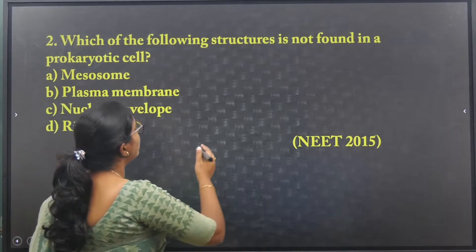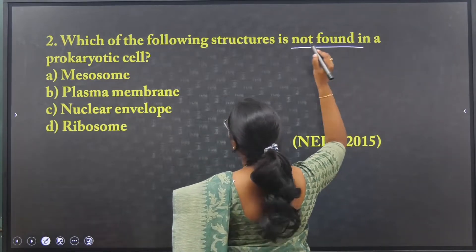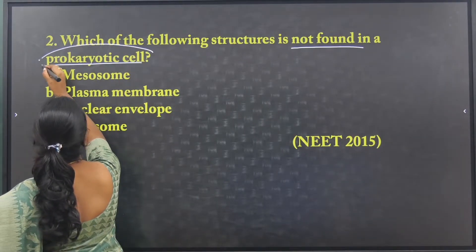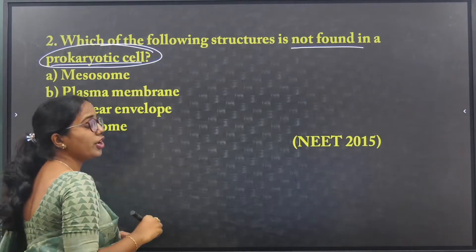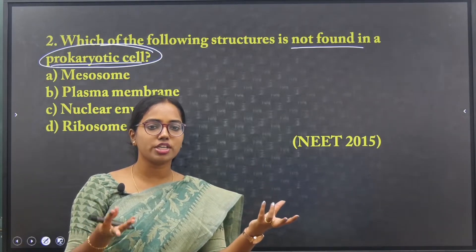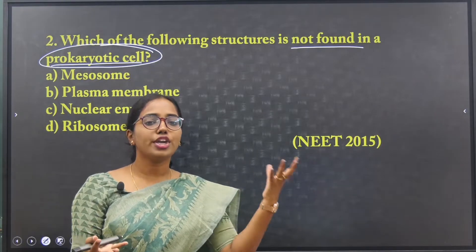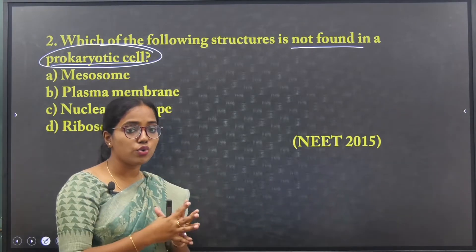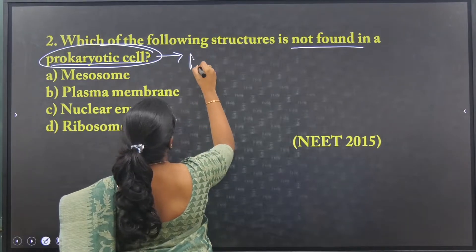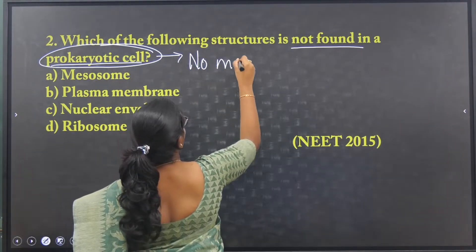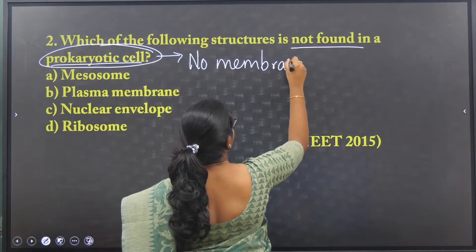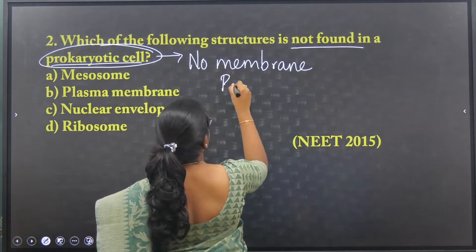Which of the following structures is not found in a prokaryotic cell? There are two different types of cells: eukaryotic cell and prokaryotic cell. Eukaryotic cells will have membrane-bound organelles, whereas prokaryotic cells have no membrane-bound organelles.